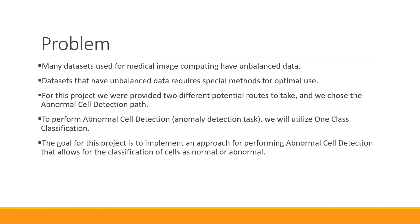The problem we're trying to tackle is that many datasets used for medical image computing have unbalanced data. The dataset we use in this project is no different. Unbalanced data usually requires special methods for optimal use. For this project we were given two different routes: either trying to classify what stage of malaria a cell is at, or just trying to determine if a cell is abnormal.